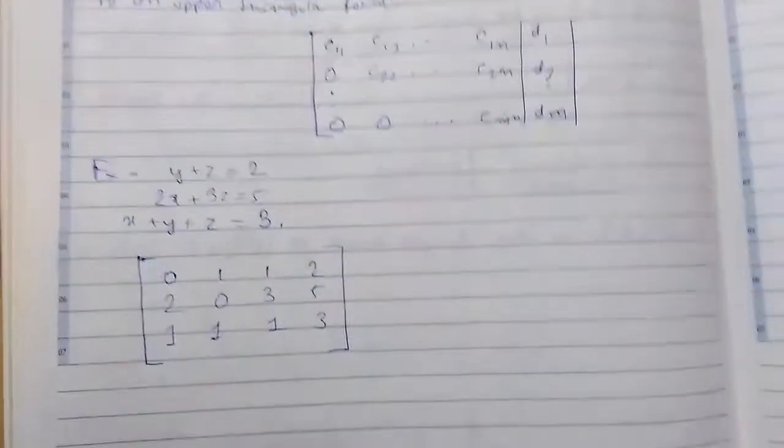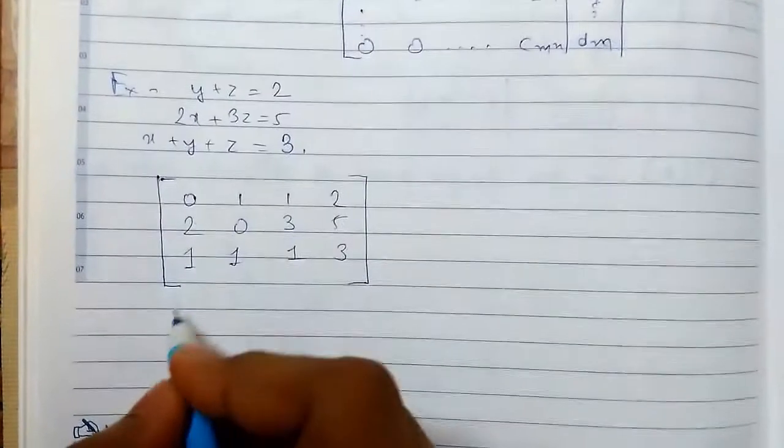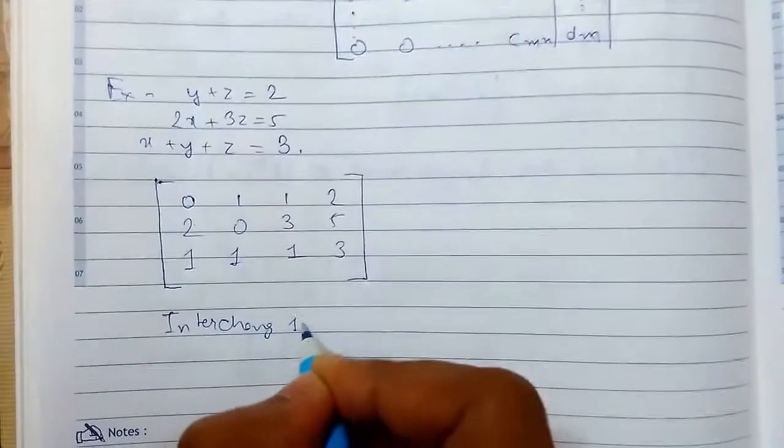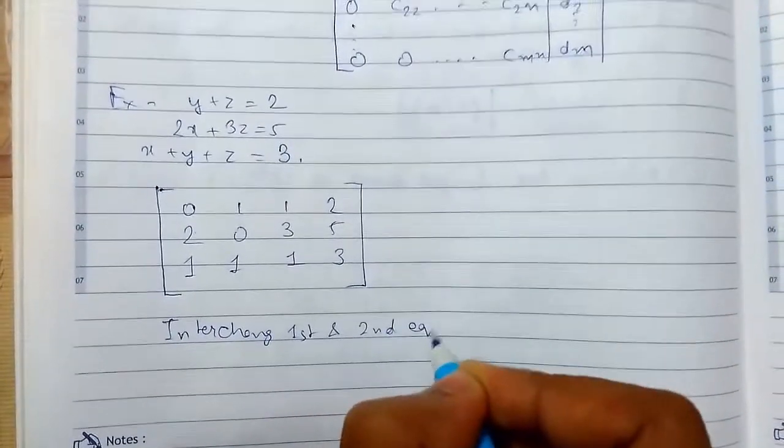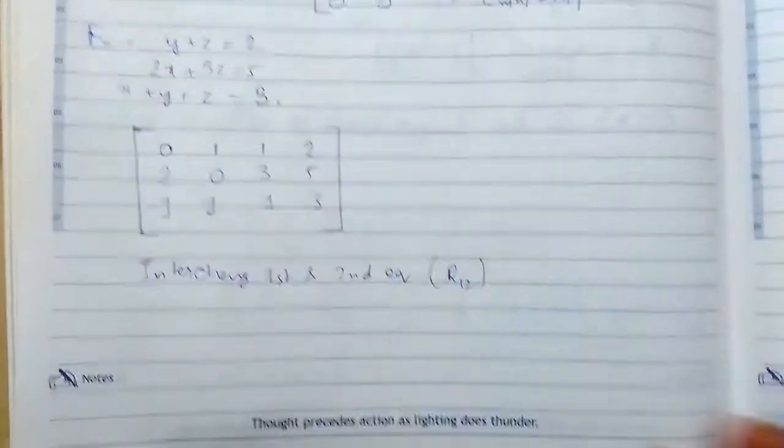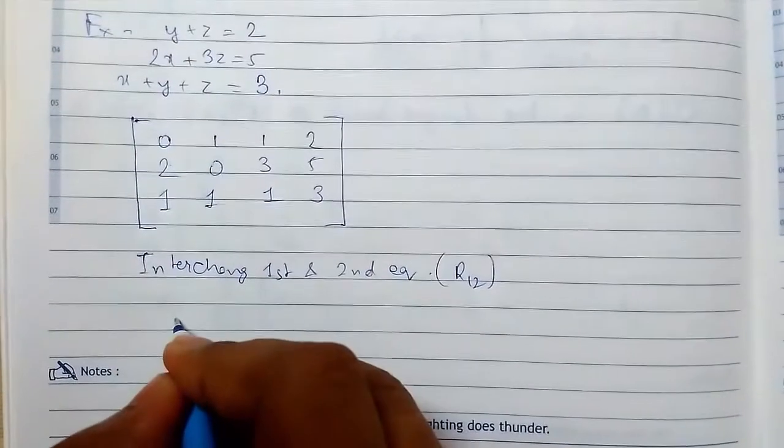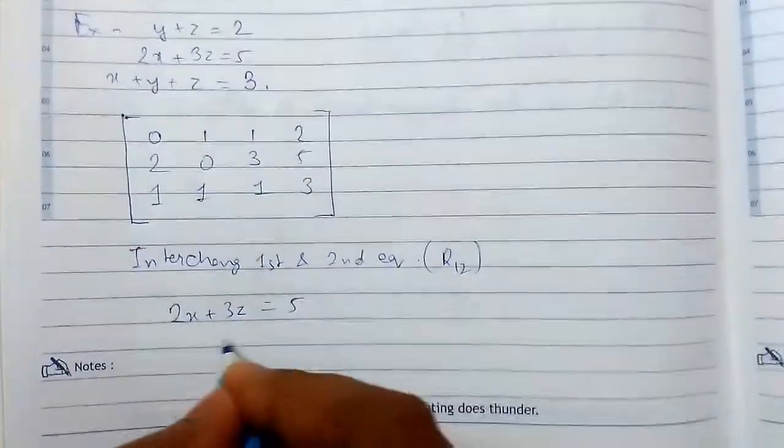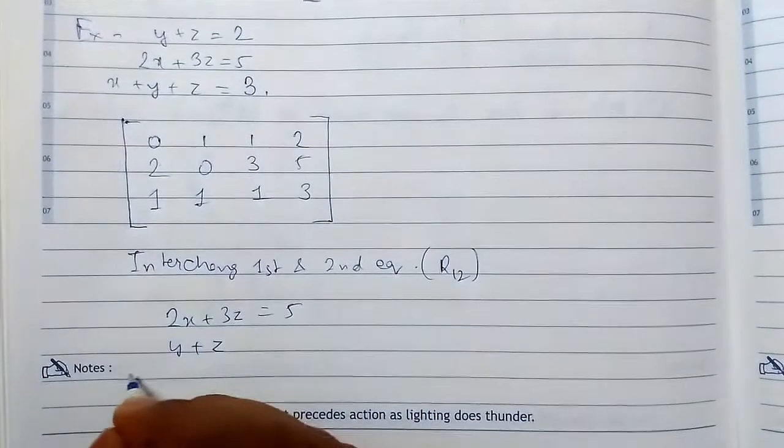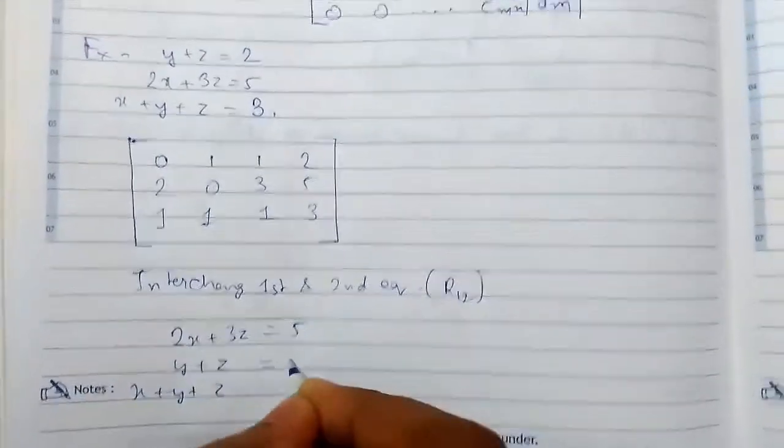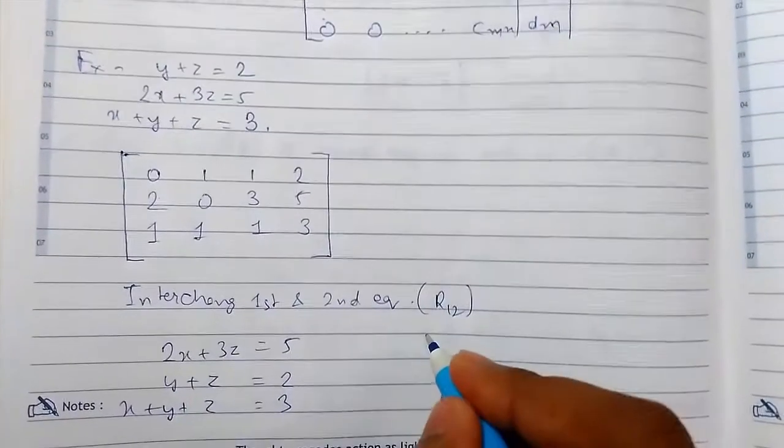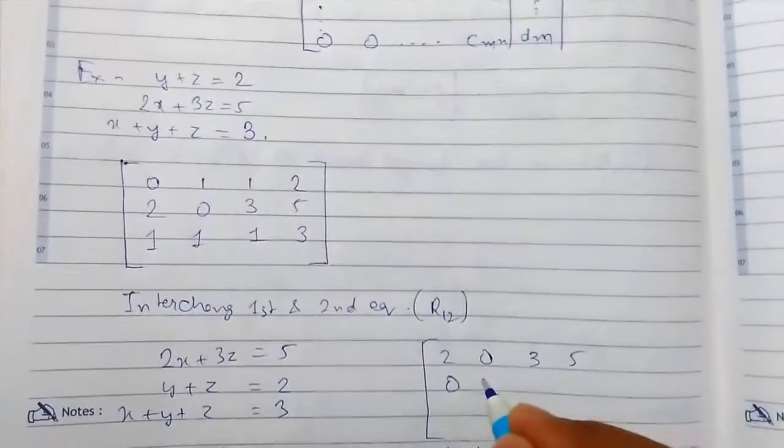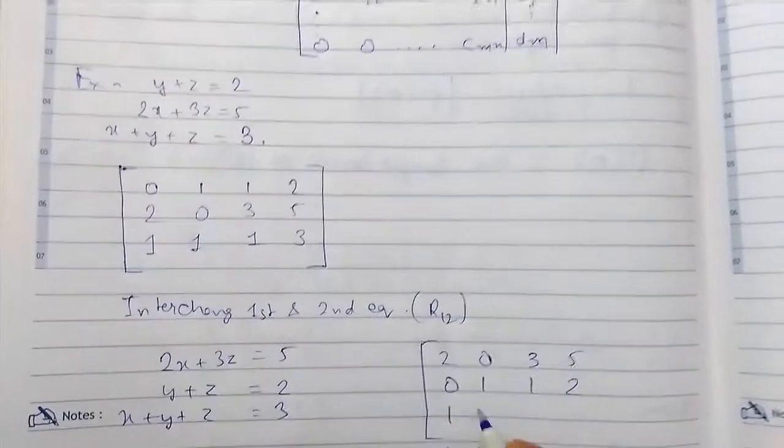Let me just start the operations. First of all what we can do is - you need to write these steps which you are doing. So interchange first and second row. Or you can also write the short form R₁↔R₂ for row interchange. Every time you need to write the equations. So just I'm interchanging it. So the equations become like this. I'm just writing the position of equations. Now I'll just draw the matrix. So 2 0 3 5, 0 1 1 2, and 1 1 1 3.